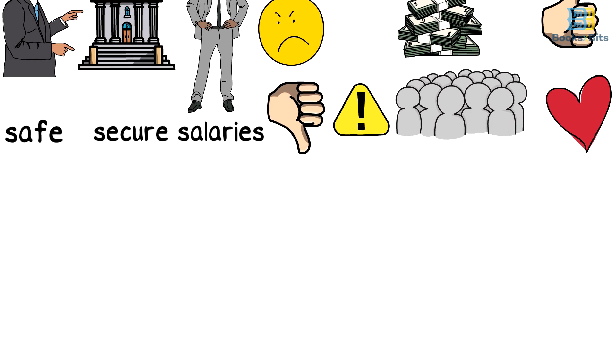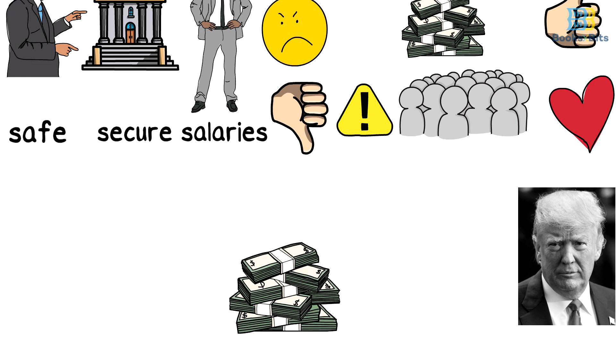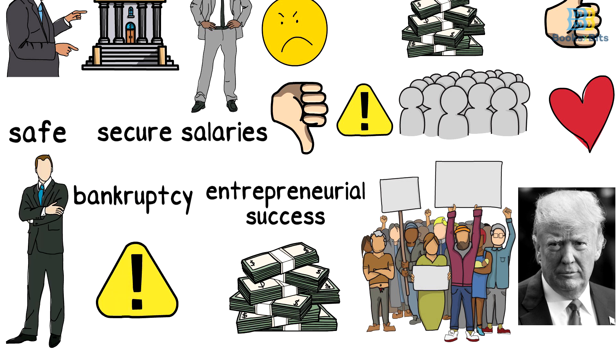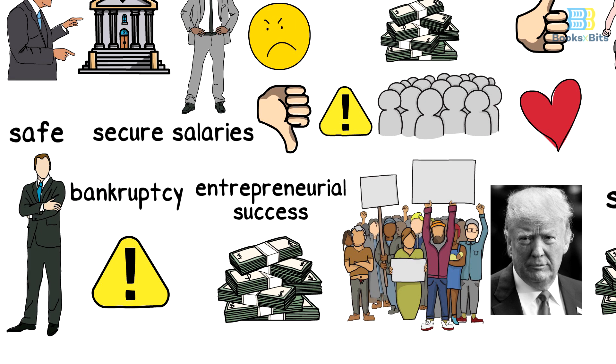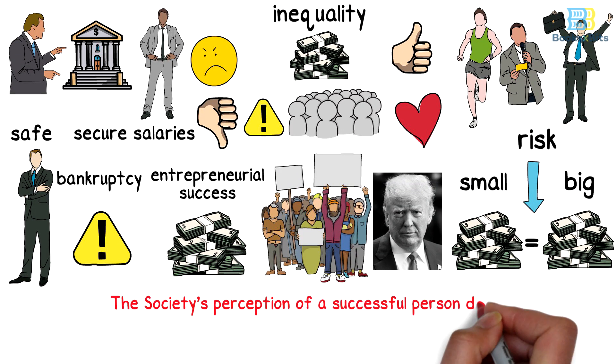That concept may explain Donald Trump's popularity. His wealth was seen by the working class voters as evidence of his entrepreneurial success, and that his bankruptcy at many points in his life is nothing but evidence that he had taken so many risks to reach a life of fame and fortune. But to remember, society's perception of a successful person depends on the amount of risk he takes to reach success.